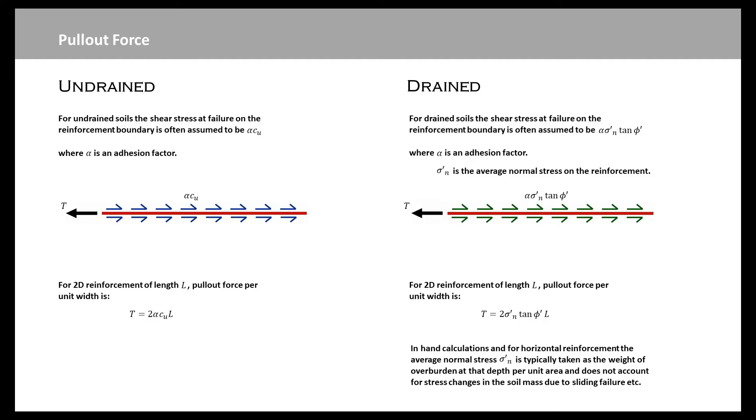For a frictional soil with drained soil, typically it is assumed that the shear stress at the failure of the boundary is the normal stress multiplied again by an adhesion factor alpha multiplied by tan phi, where phi is the friction angle of the surrounding soil. So, the pullout force is going to be given by this equation: 2 alpha sigma_n tan phi L, to cover the friction at the top and bottom of the reinforcement.